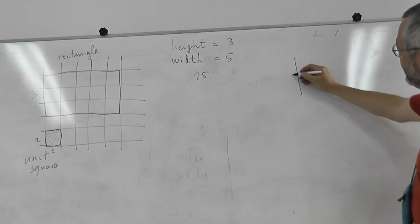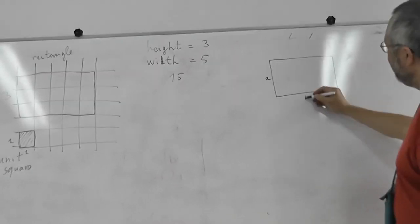In general, if we have a rectangle with sides A and B, it's AB.